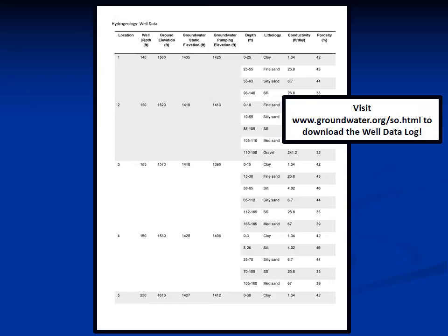Let's look at just well one. Well one has a depth of 140 feet below the surface. The elevation of the surface is 1,560 feet. The groundwater static elevation, or water table elevation when the well is not pumping, is 1,435 feet. When the well is pumping water, the water table lowers to 1,425 feet, which is the groundwater pumping elevation. The log also lists the lithology, or soil type, for every layer below the surface, giving the corresponding conductivity and porosity. For example, at 60 feet below the surface, the soil is silty sand, the conductivity is 6.7 feet per day, and the porosity is 44%.